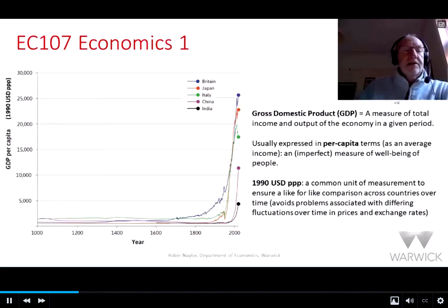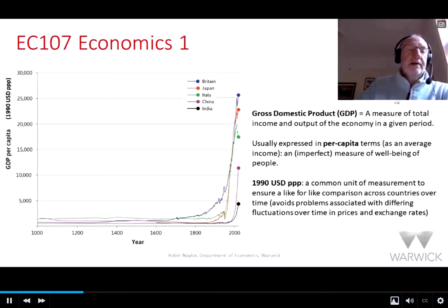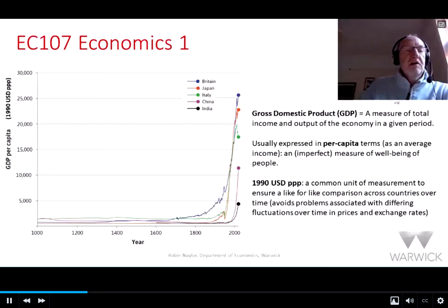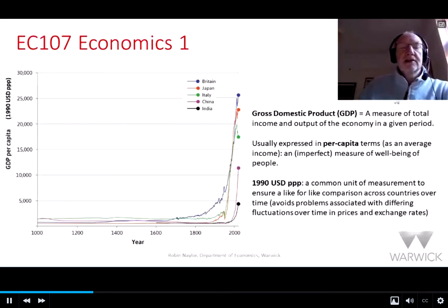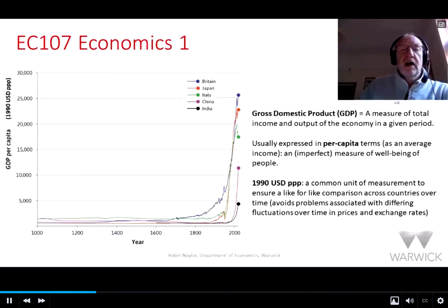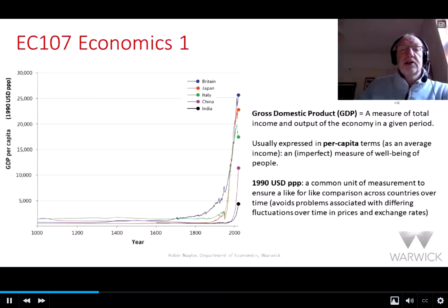What you can most obviously see from this graph is the broad constancy of GDP per capita from the year 1000. Although we don't have the chart going back before that, the same would be true for many years prior as well. This broad constancy runs at a level of below 1,000 or towards 2,000 in some economies, almost entirely constant until around 1650–1700. Things are necessarily a little vague — we can't be too precise about when things started, and the data are not so reliable going that far back. It's a Herculean task to have produced these data over such a long period of time.